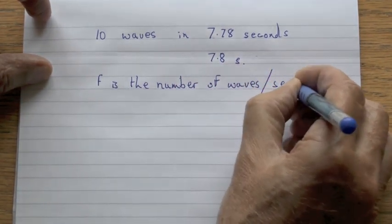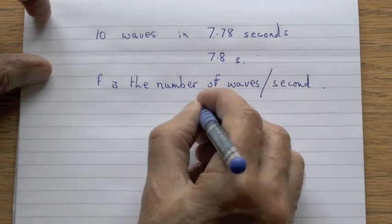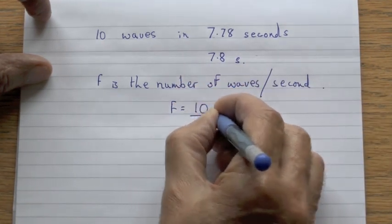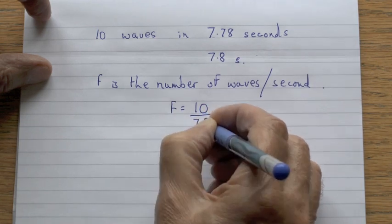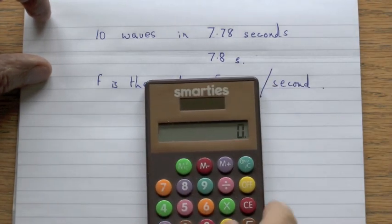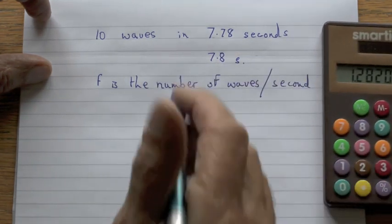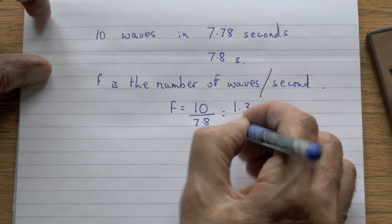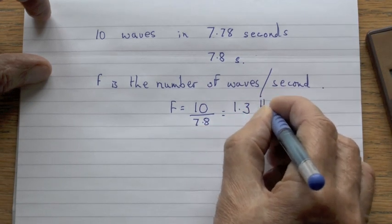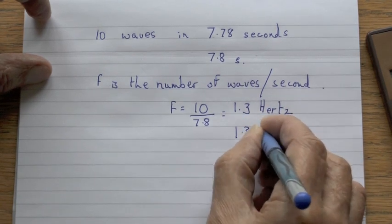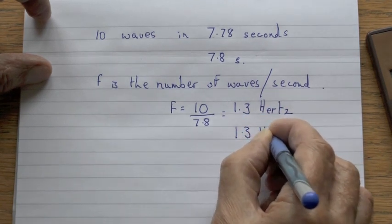So the frequency is 10 divided by 7.8, which comes out at 1.28 hertz — or 1.3 hertz, given that we didn't measure so accurately. Hertz is spelled H-E-R-T-Z and the abbreviation is simply Hz.